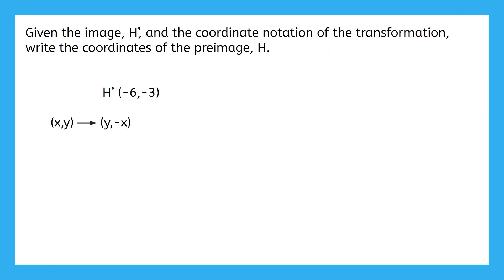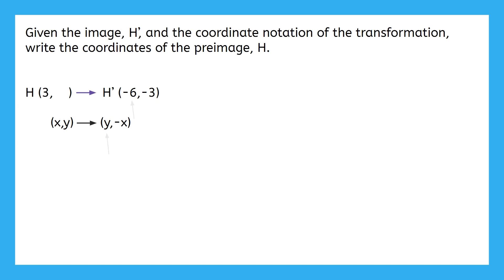Here's the final example. Given the image point H prime and the coordinate notation of the transformation, write the coordinates of the preimage point H. Since we're given the image, we're going to have to work backwards to find the preimage. Our coordinate notation tells us that negative x equals negative 3. We can write that as an equation and solve for x by multiplying by negative 1, giving us x equals 3. We can also see that y equals negative 6, so we write negative 6 as the y coordinate of our preimage. Remember to set up equations and solve any time you need to visualize how to get back to the preimage, as errors can occur more easily if we skip that step.